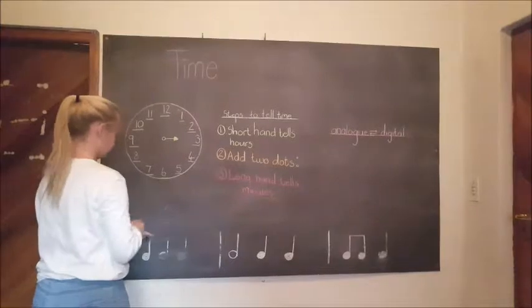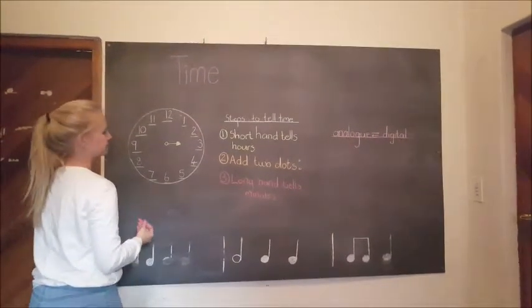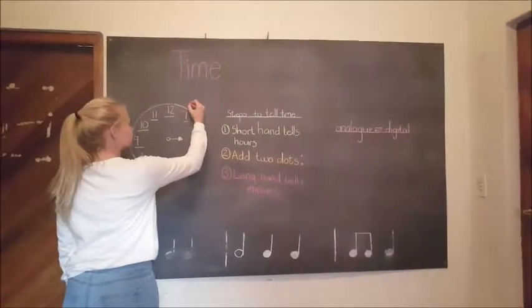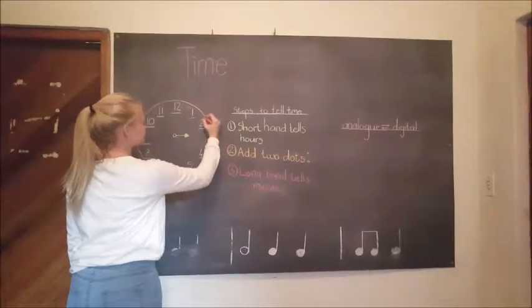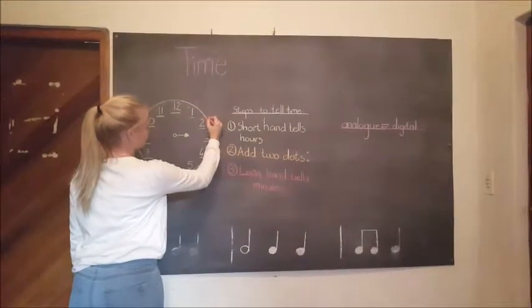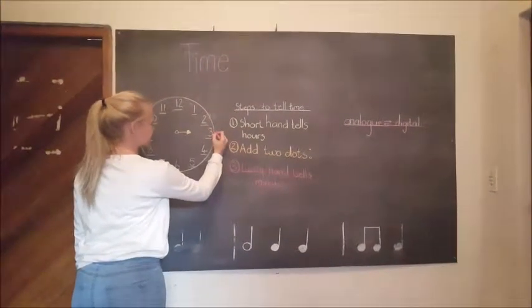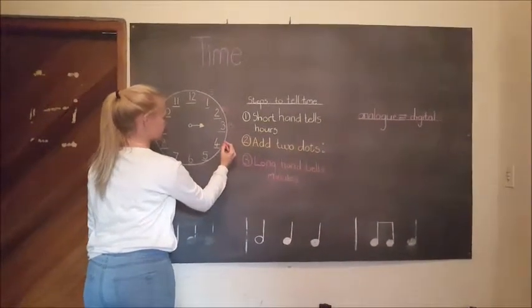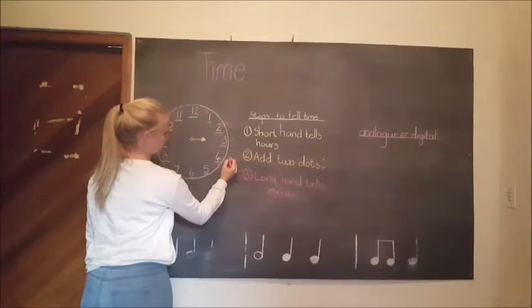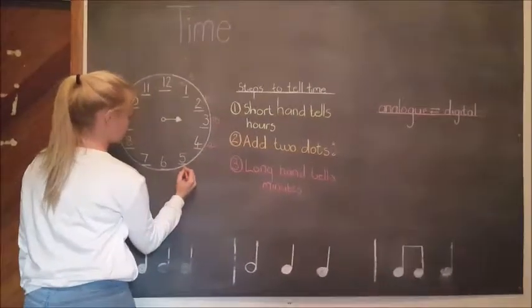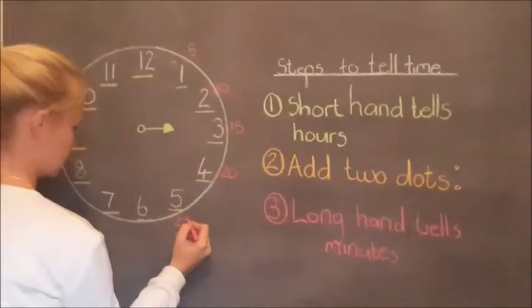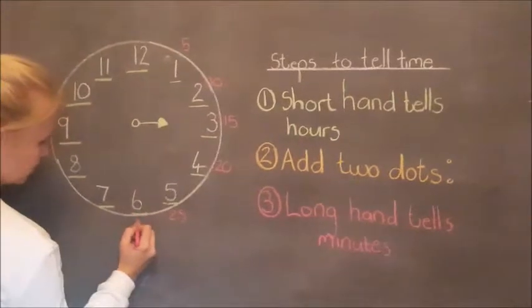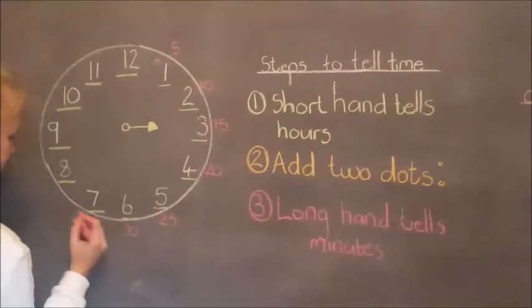The longhand on the clock tells us the minutes. We read the minutes in fives. 5, 10, 15, 20, 25, 30. Remember 30 means half past.